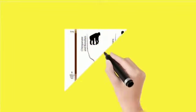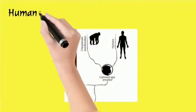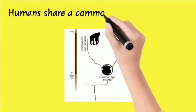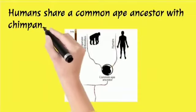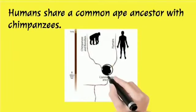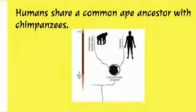The first example: 'Humans share a common ape ancestor with chimpanzees.' Ape means 'to kalen poti'.